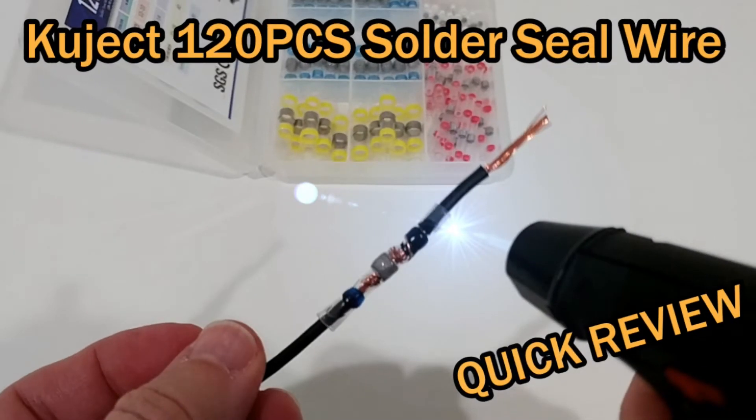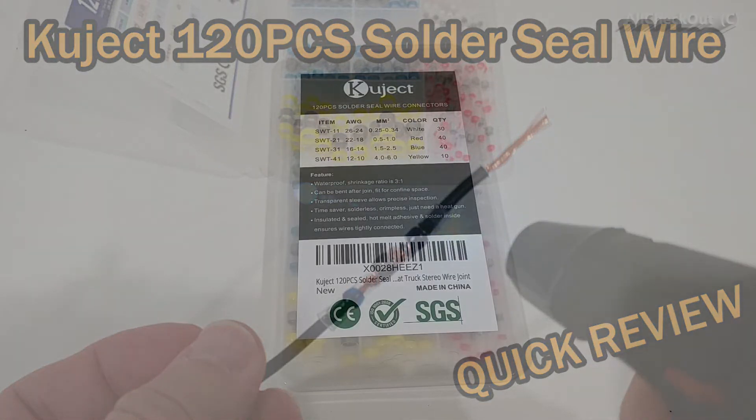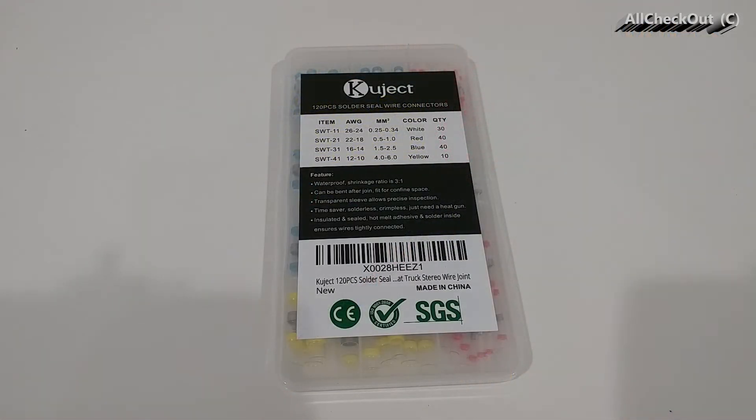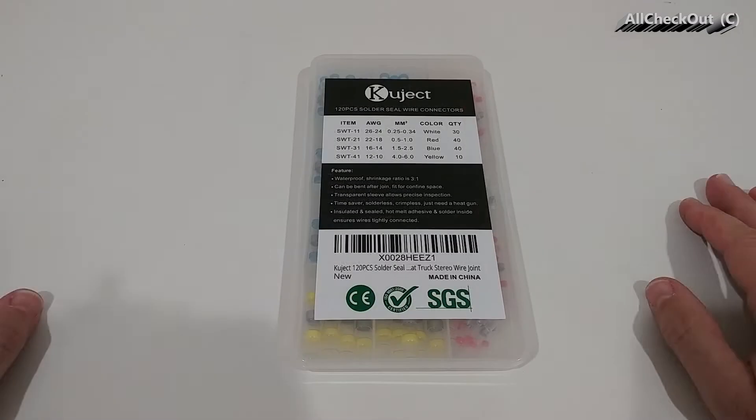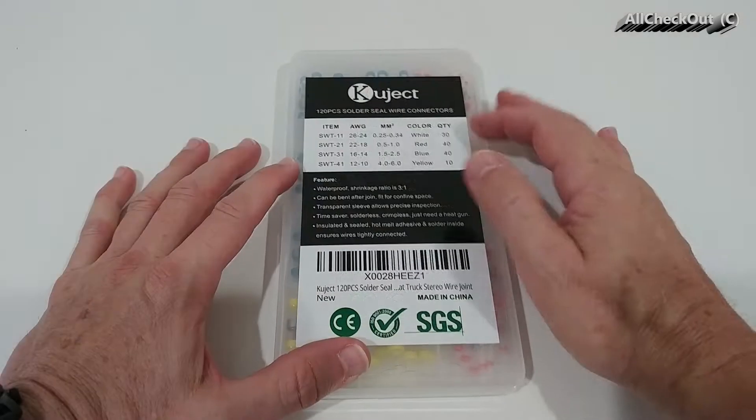Hi guys, welcome to this quick review about the Cue Jack 120 pieces solder seal wire connectors. It says self-solder heat shrink butt connector solder sleeve. By the way, this is not a sponsored review. I bought this thing at normal price with my own money. Here you can see the items.